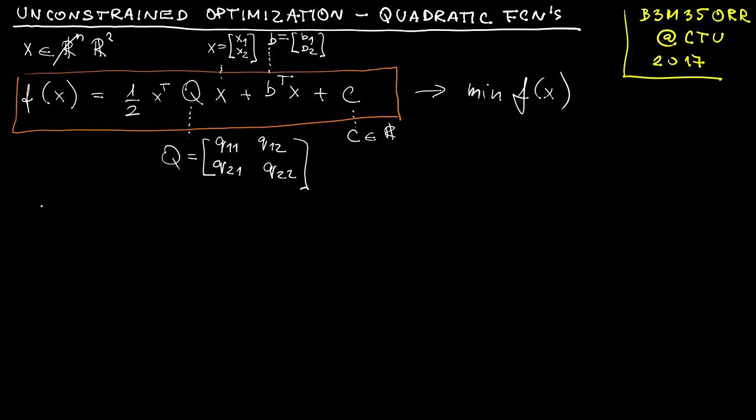First-order necessary conditions: recall that these are given by the requirement that the gradient is vanishing, that the gradient equals zero. So we need to calculate the gradient.